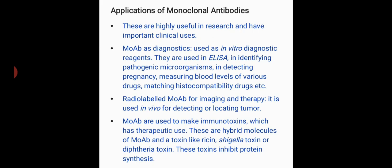Monoclonal antibodies are also used in detecting pregnancy, that is in the human chorionic gonadotropin urine test. Other uses include measuring blood levels of various drugs, matching histocompatibility antigens, and so on.